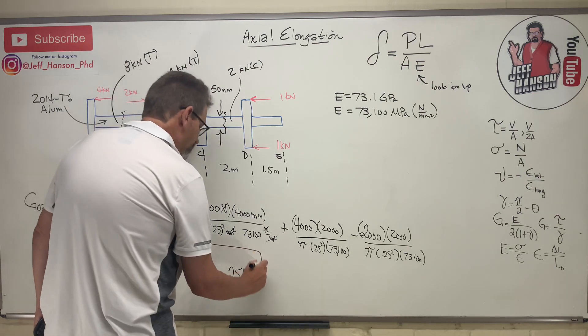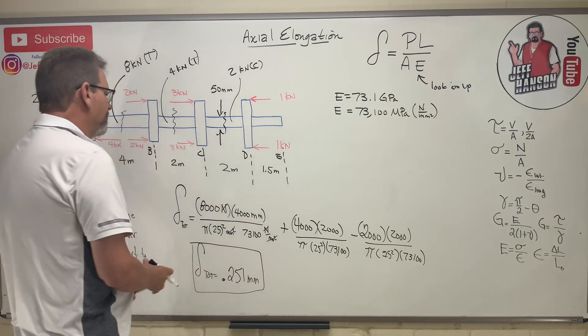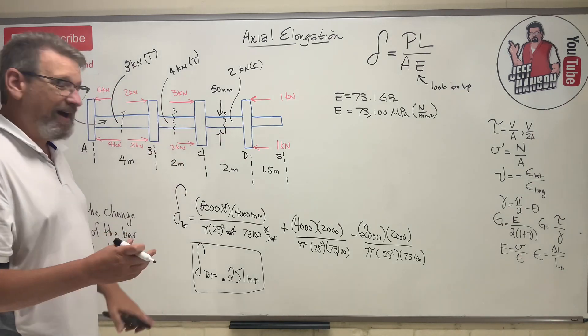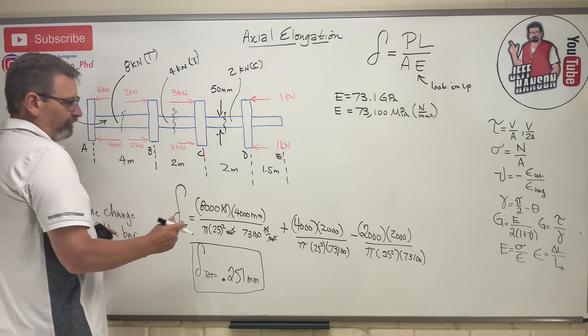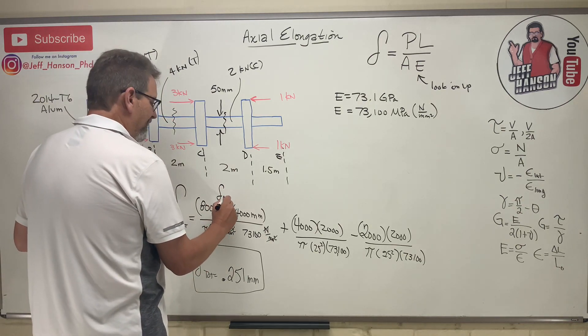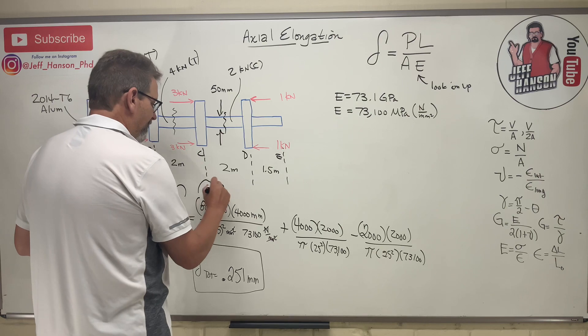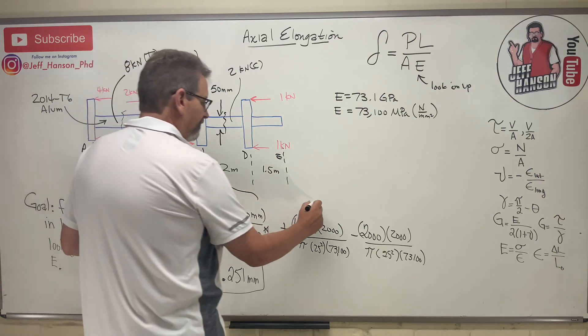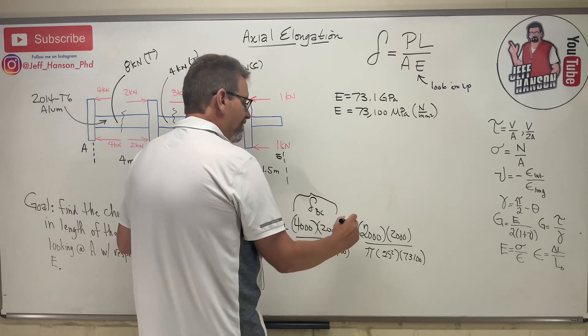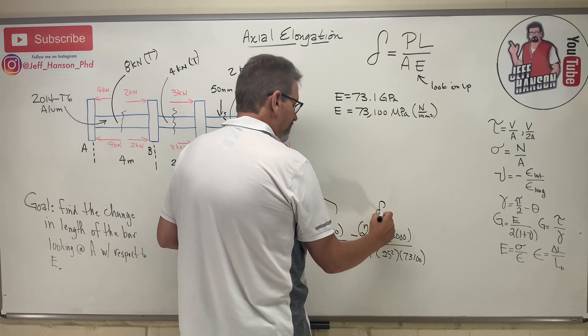So the whole thing - this one stretched, that one stretched, and that one compressed. Could I find the stretch in each one of those? Yeah, I mean here it is: here's delta AB right here, this is delta BC, and this would be your delta CD.